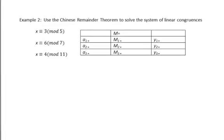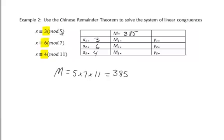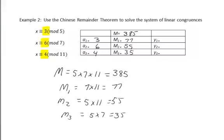Example 2: We'll go through this one a bit more quickly. The values a1, a2, a3 come from the original congruences: a1 is 3, a2 is 6, a3 is 4. Next, m is the product of the three mods — 5 times 7 times 11, or 385. Then m1 is 7 times 11 = 77; m2 is 5 times 11 = 55; and m3 is 5 times 7 = 35.